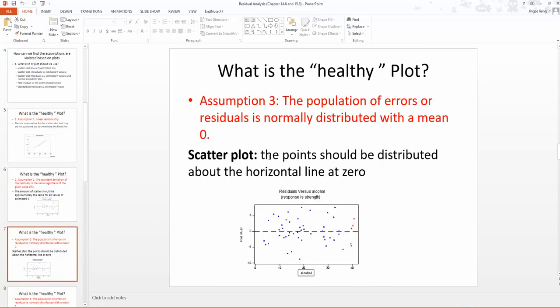If the mean zero assumption is not violated, when you look at your residual against predicted Y-value plot, the points should be distributed around the horizontal zero line. You should find the scatters are evenly distributed around this zero horizontal line. You cannot see too many dots below the zero line and fewer dots above. They should be almost evenly distributed above and below this zero horizontal line.